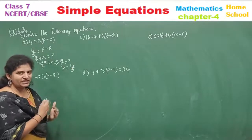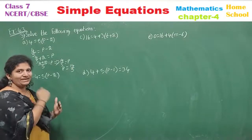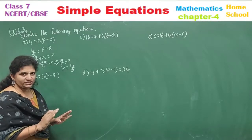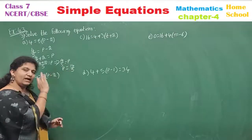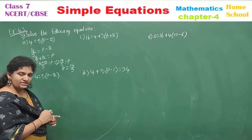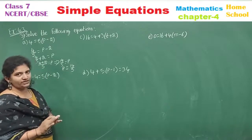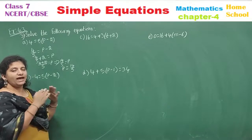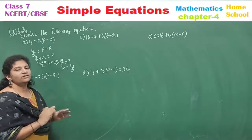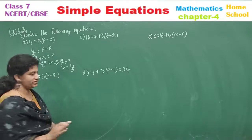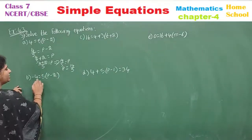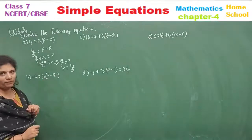When interchanging from LHS to RHS or RHS to LHS at the same time — that is, the complete LHS and complete RHS shifting to the other side — there is no sign change. Next, sub-question (b): minus 4 is equal to 5 into (p minus 2).